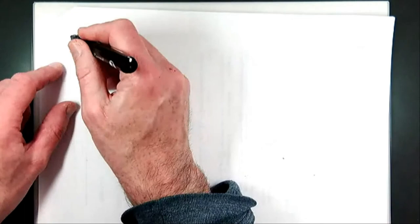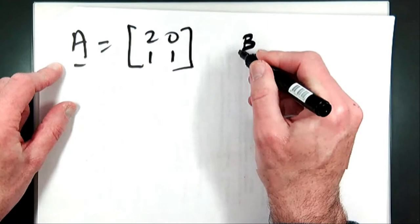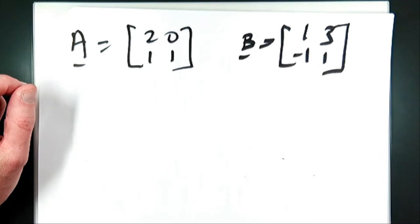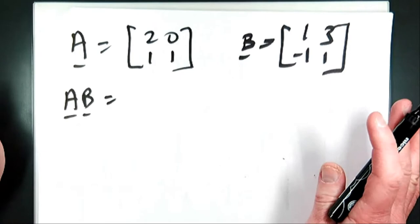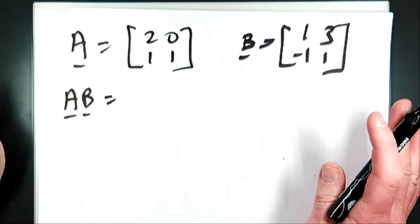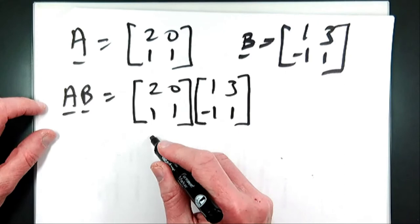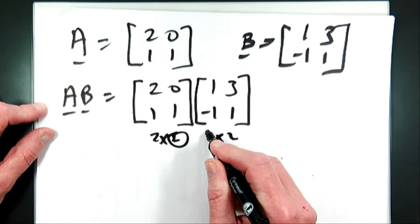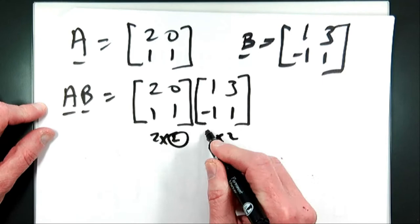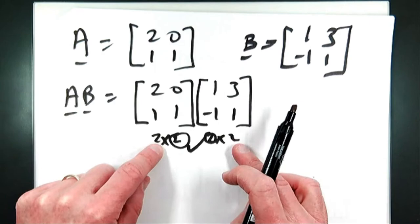The first example: matrix A is [2, 0; 1, 1] and matrix B is [1, 3; −1, 1]. We're going to multiply A by B. Whenever you're asked to do matrix multiplication, write the matrices down. So A is [2, 0; 1, 1] and B is [1, 3; −1, 1]. Underneath, write down the dimensions: 2×2. These two middle numbers are the same, so we can multiply — we talked about this in the first lecture. The outer numbers tell us we're going to get a 2×2 matrix.